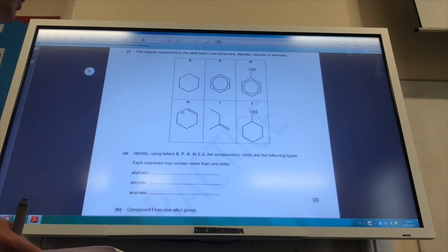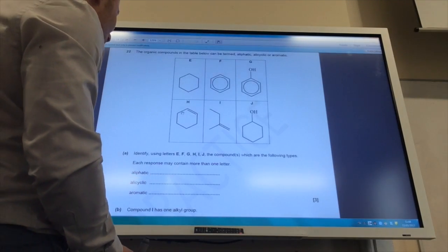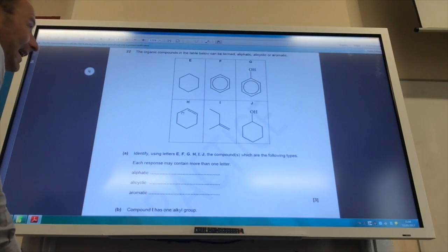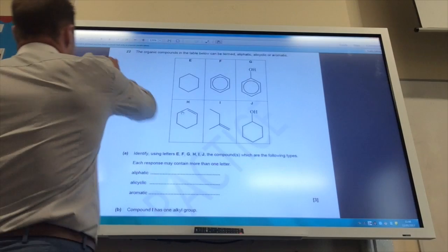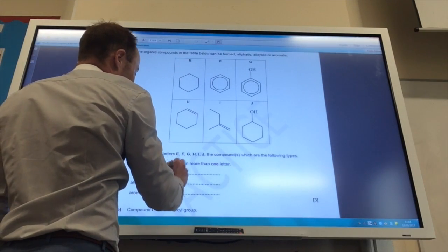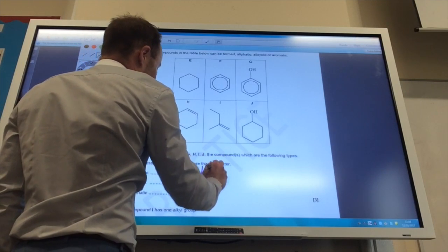We've got some nice pictures now of some molecules. Identify using the letters which are the following types. Which are aliphatic? Aliphatic is anything without a benzene ring in. So it's going to be E, H, I, and J.